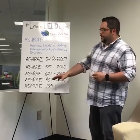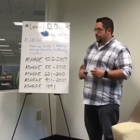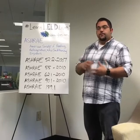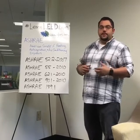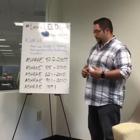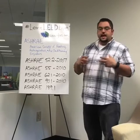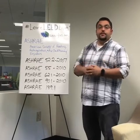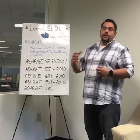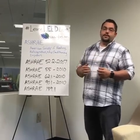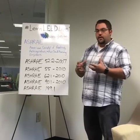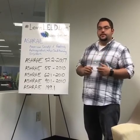Finally, ASHRAE 189.1 is starting to show up on some of the updates to the LEED Green Associate over the last couple of years. That's a high-performance building standard on one hand, but where it shows up within the LEED rating system is actually related to our cooling towers, evaporation, and that efficiency.